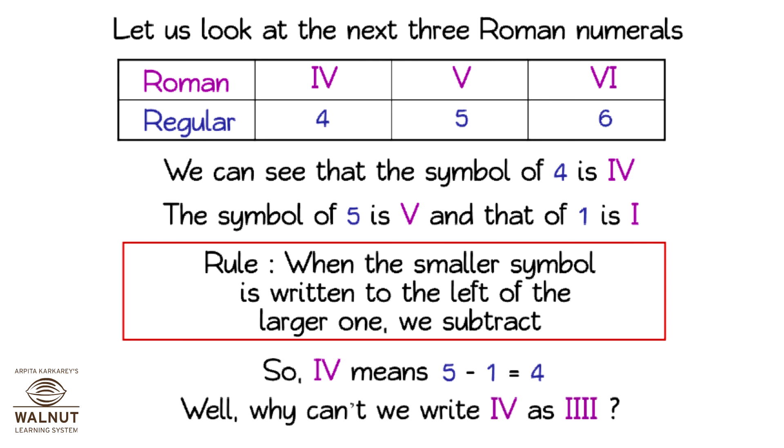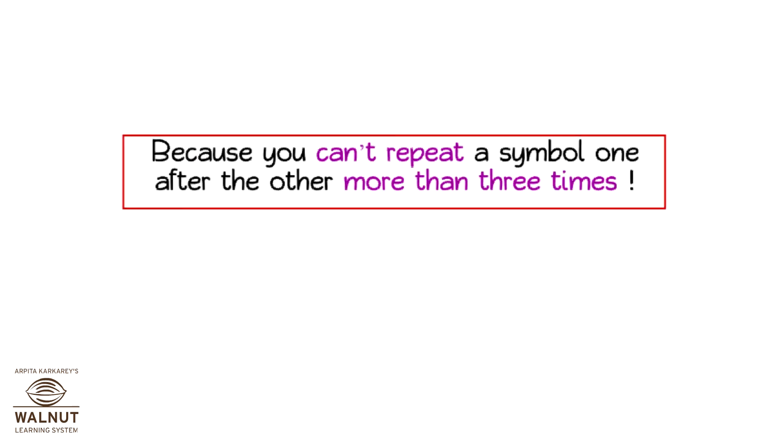Well, why can't we write IV as 4 times I? Because you can't repeat a symbol one after the other more than 3 times. This is one more rule you have to remember.